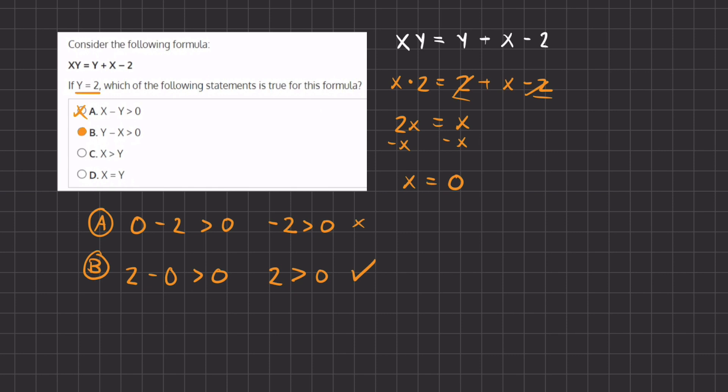Therefore B will be our final answer. Let's take a look why C and D are incorrect. C states that x which is 0 is greater than y which is 2.